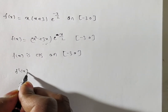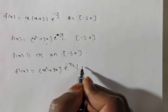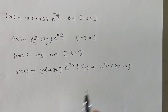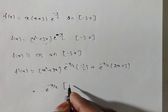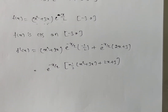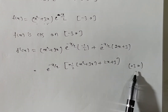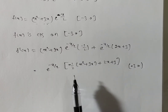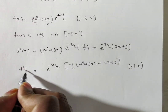Next, we check whether f'(x) exists. Applying the UV rule: f'(x) = (x² + 3x) · e^(−x/2) · (−1/2) + e^(−x/2) · (2x + 3). Taking e^(−x/2) as common: f'(x) = e^(−x/2) · [−(1/2)(x² + 3x) + (2x + 3)]. For any value in (−3, 0), this gives a finite value, so f'(x) exists on the open interval (−3, 0).